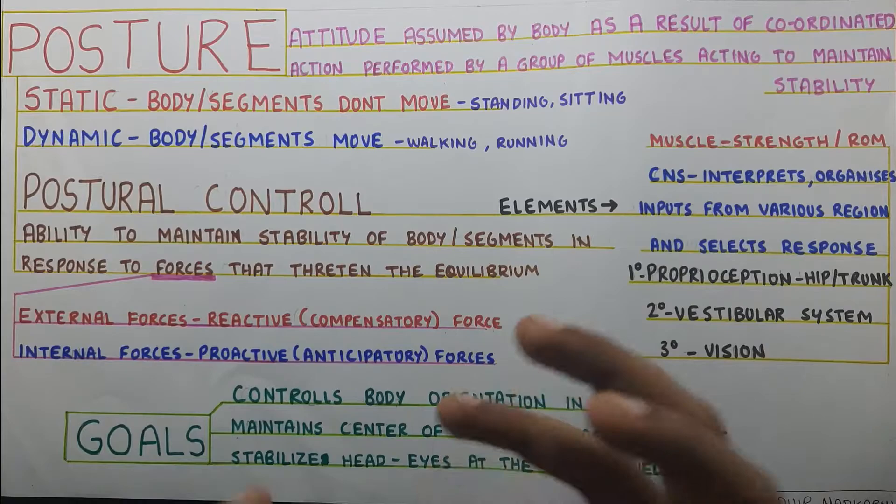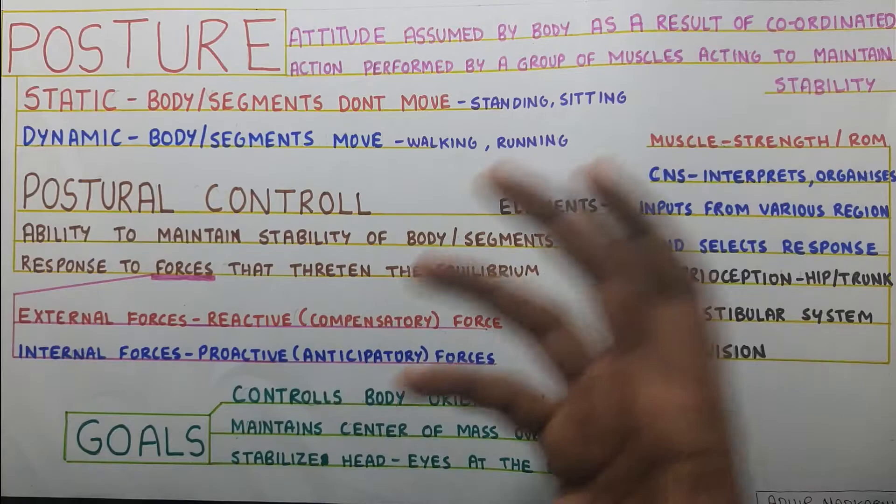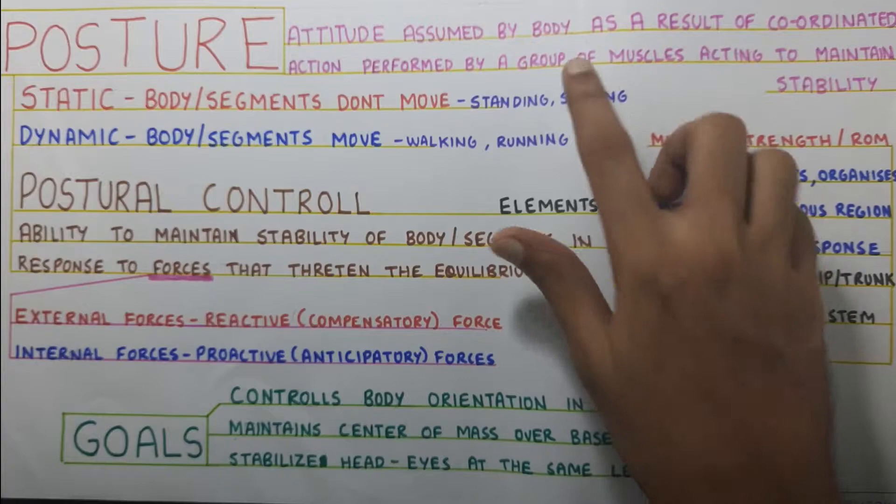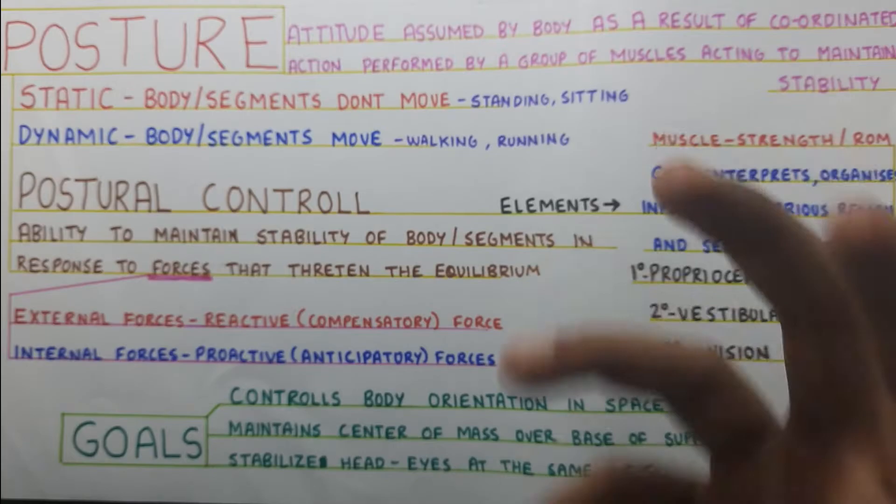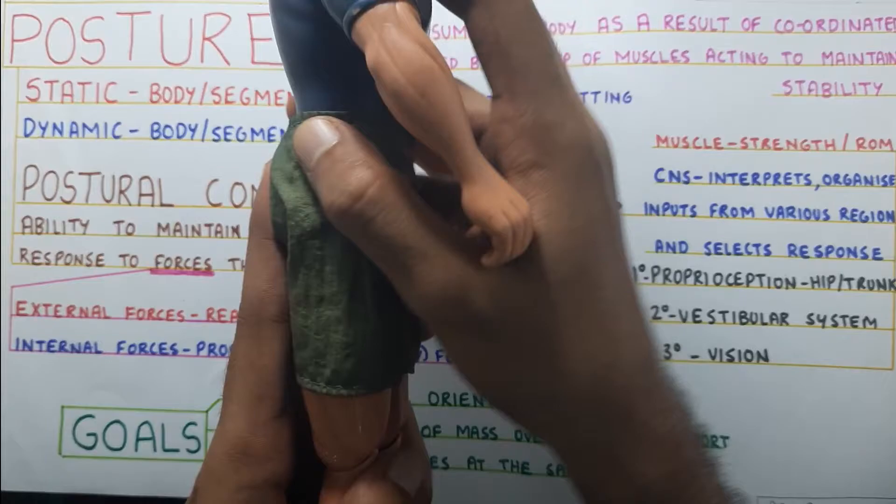Let's start with the definition. Posture is the attitude assumed by the body as a result of coordinated action performed by a group of muscles acting to maintain stability. If we take Job, basically his flexors and extensors will be working to maintain him in a standing position. That is the coordinated action performed by a group of muscles to maintain stability.